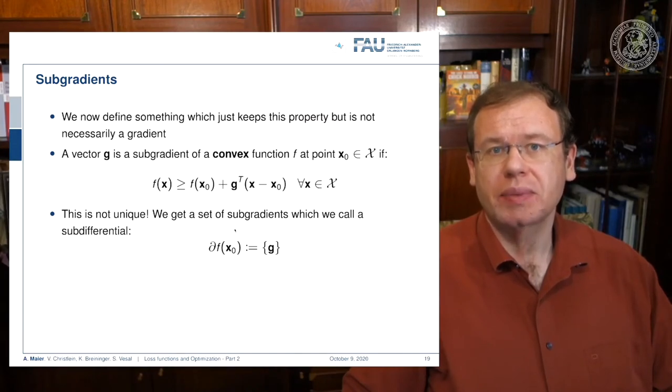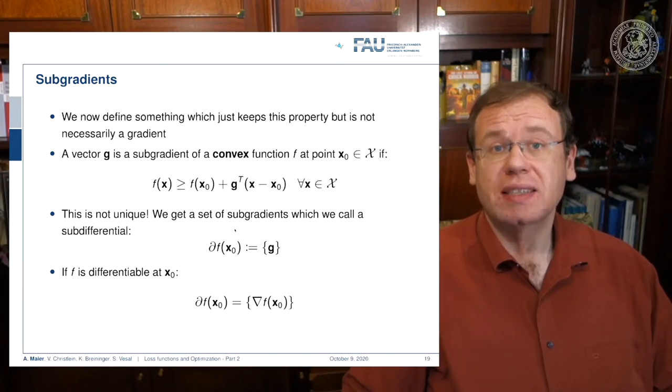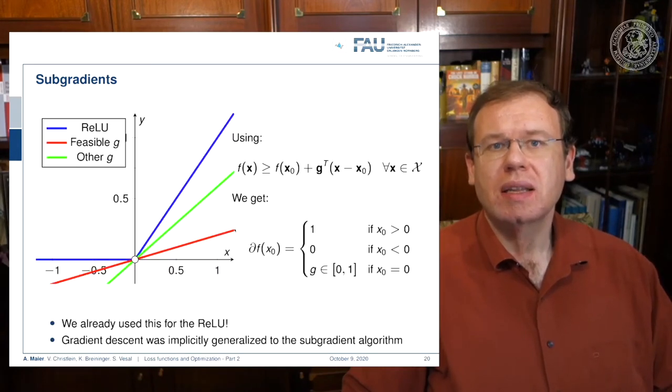There could be multiple of those g's that fulfill this property, so g is not required to be unique. The set of all these subgradients is then called the sub-differential. So the sub-differential is then a set of subgradients that all fulfill this property. If f of x is differentiable at x zero, we can simply say that the set containing all sub-differentials is simply the set containing the gradient.